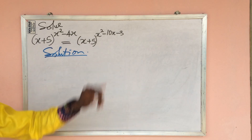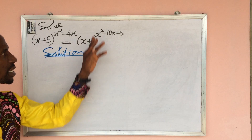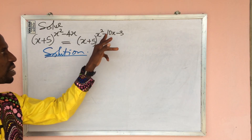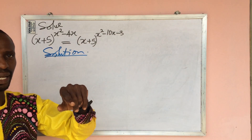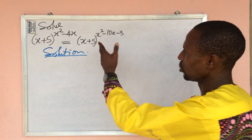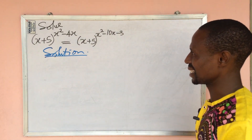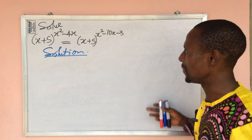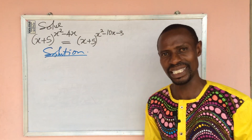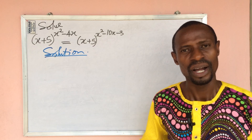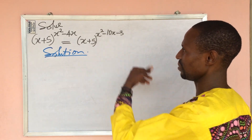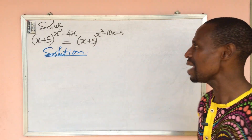The problem is: (x + 5) to the power of (x² - 4x) equals (x + 5) to the power of (x² - 10x - 3). Now you may be tempted to look at this and say the answer is minus one over two — do not be hasty to just conclude. We are going to have two solutions, two values of x.